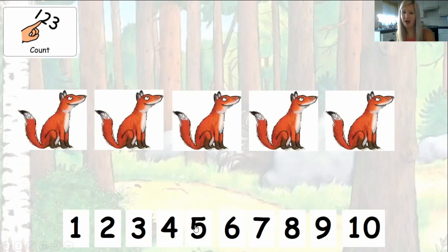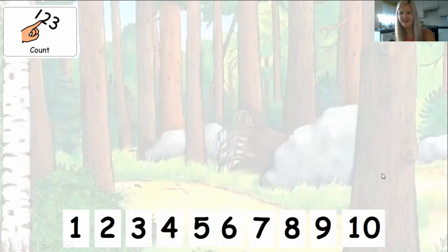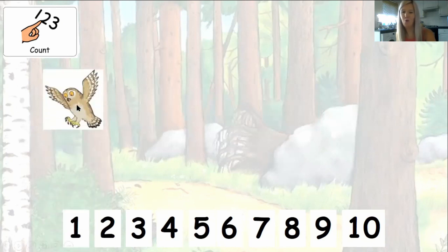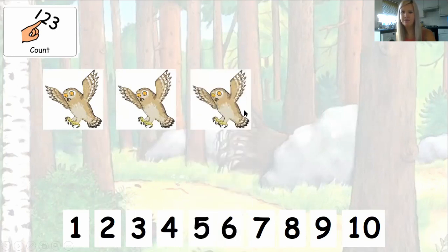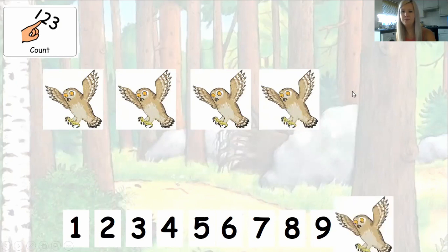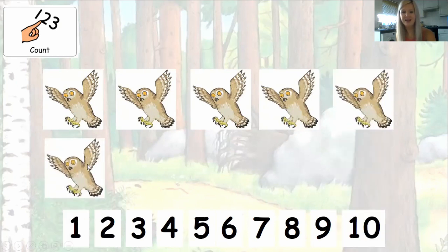Were you right? Well done starfish. Time to count the owls. One, two, three, four, five, six. There are six owls. Six. Can you see number six at the bottom? Can you point to it and show your adult?